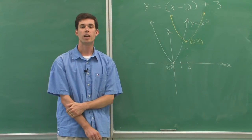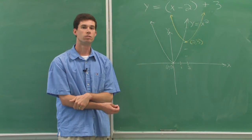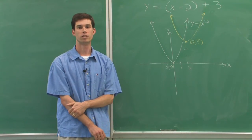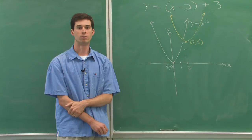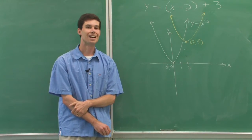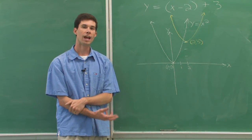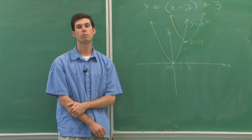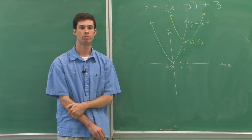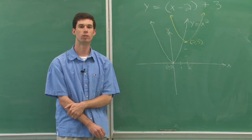Once I know the basic shape, it's just a matter of taking the different components of the translation and moving the graph around. So notice that the 2 is inside the square. And we're subtracting. So that's going to be a horizontal translation.